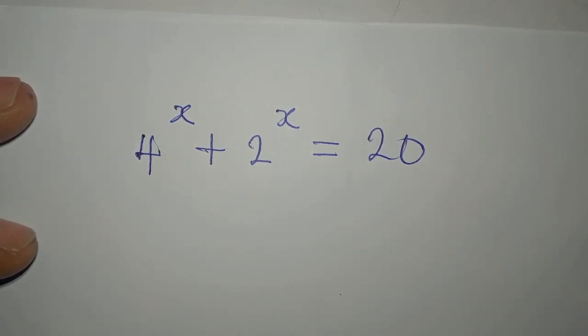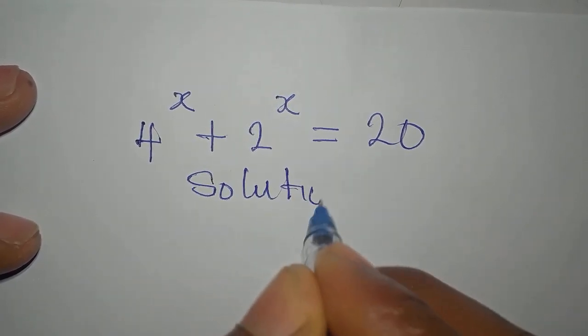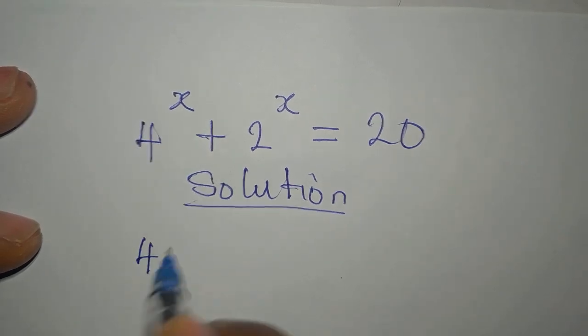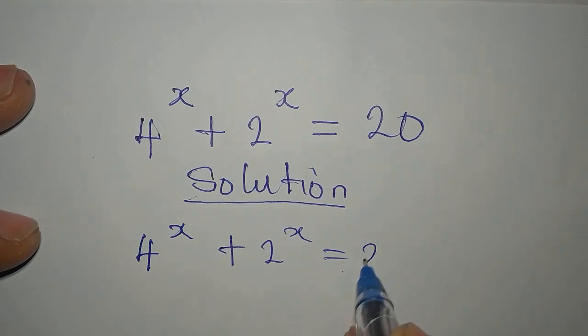Hello, everyone. Let's provide the complete solution to this problem. Okay, let's provide the real solution, only the real solution. So we have 4 to the power of x plus 2 to the power of x equals 20.